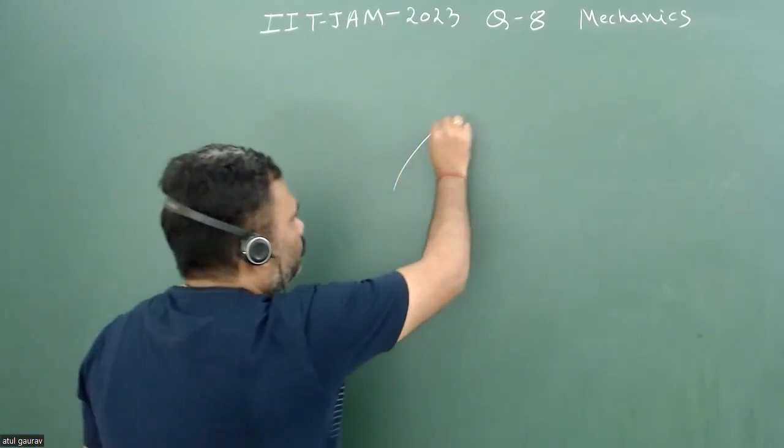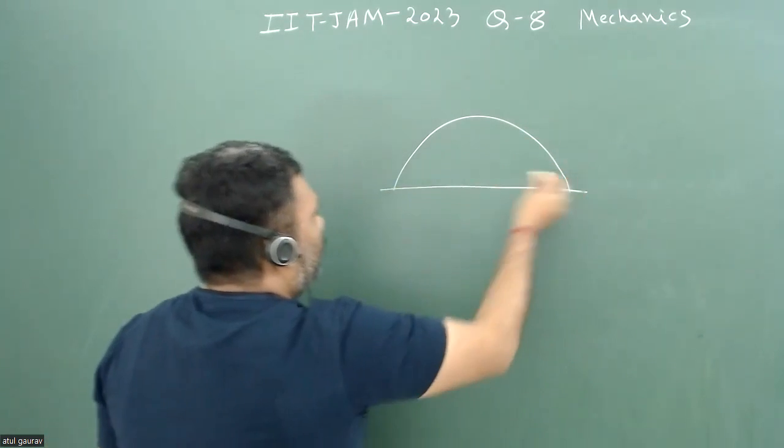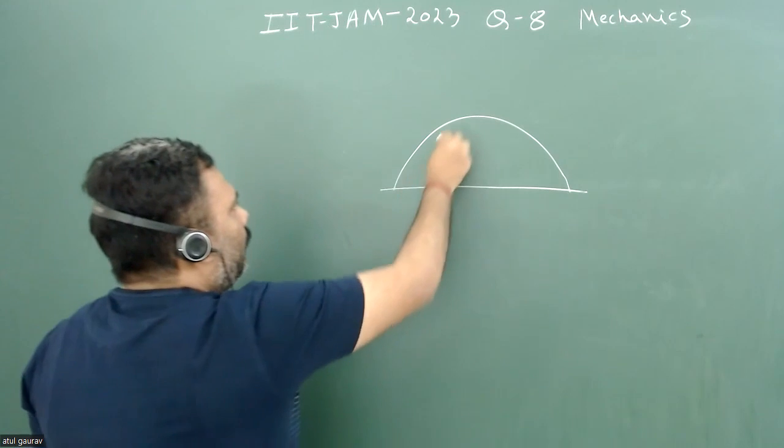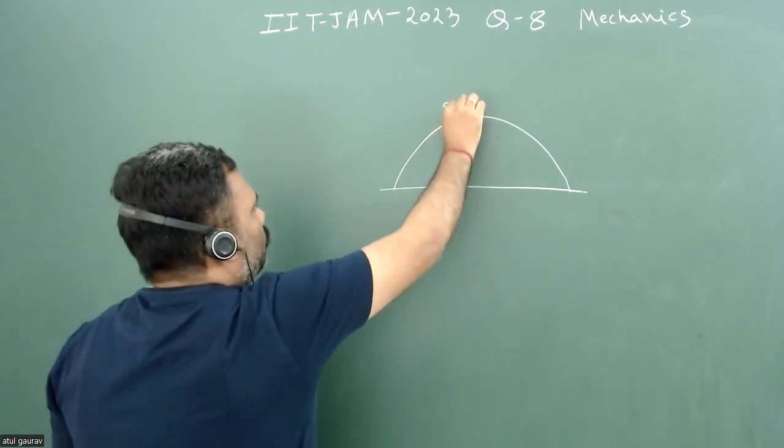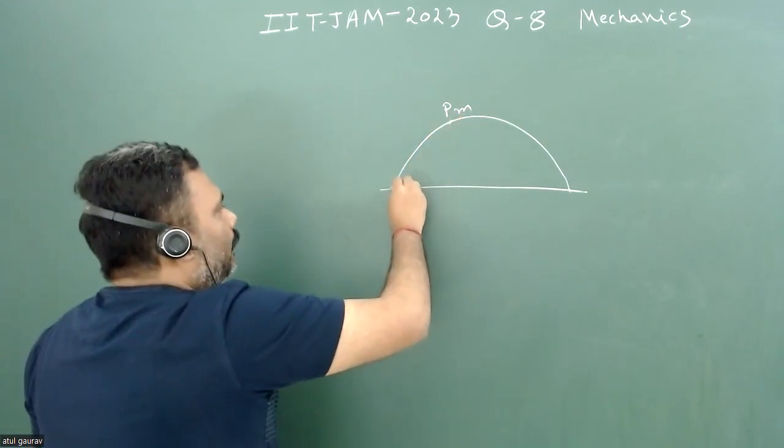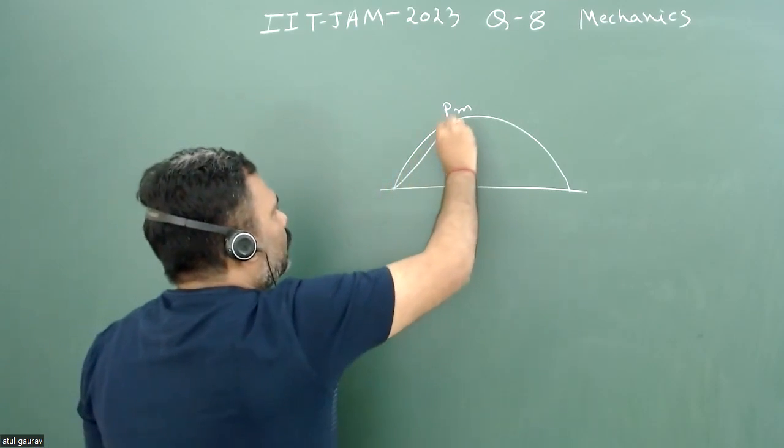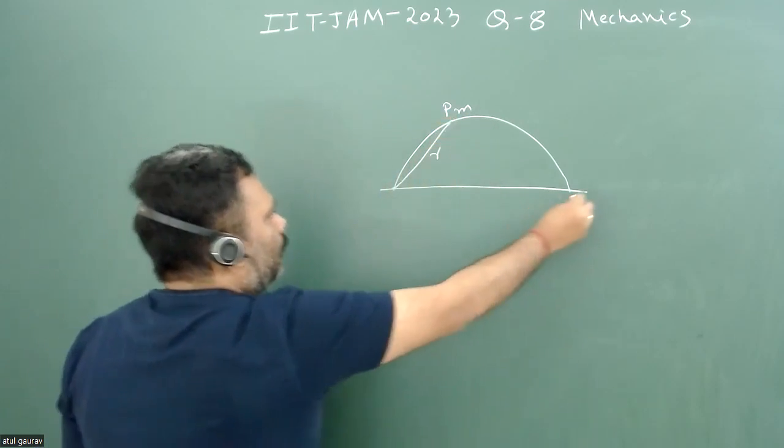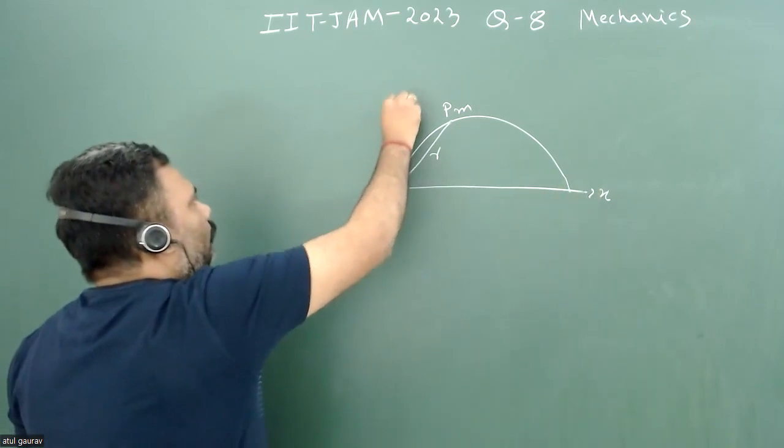So there is a projectile motion. This is a projectile motion and what we have at any point, you can say this point is P, the mass of the projectile or particle is M. We can assume this is the origin and this is our R vector. This is our X direction and this one is our Y direction.